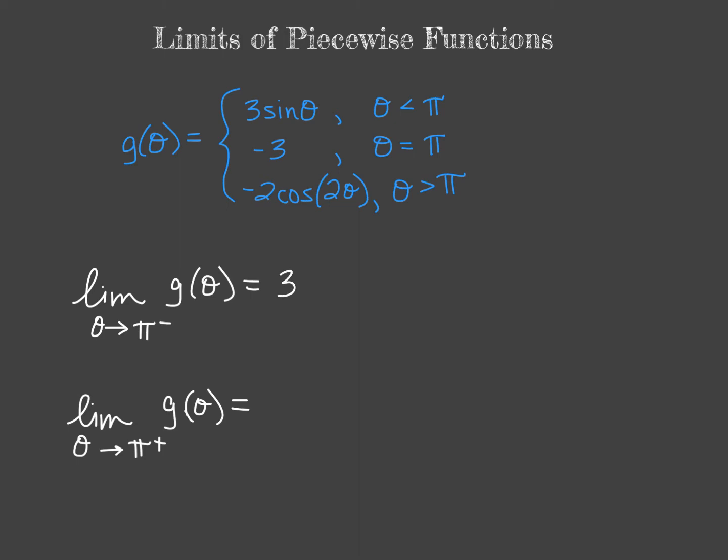So we'll plug in and we'll have 3 sine of pi. And then the sine of pi is zero, so we have 3 times 0 and therefore this left-sided limit is zero.